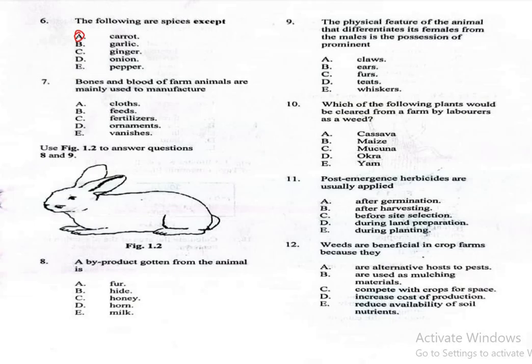Question 7. Bones and blood of farm animals are mainly used to manufacture: A. Clothes, B. Feeds, C. Fertilizers, D. Ornaments, E. Varnishes. The correct answer is fertilizers, which is option C. Bone meal and blood meal are processed into fertilizers due to their rich nutrient content.